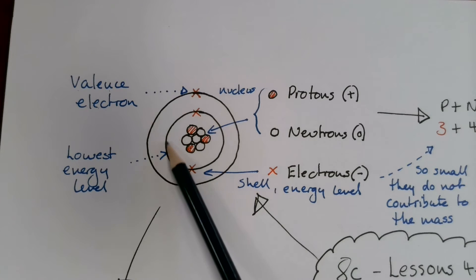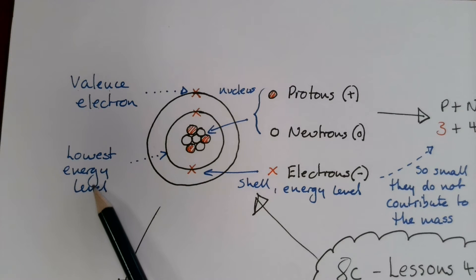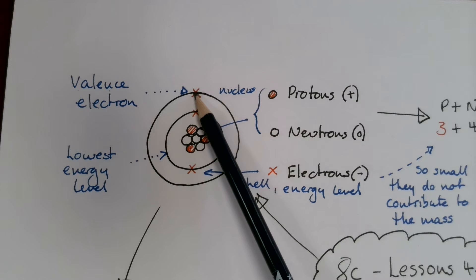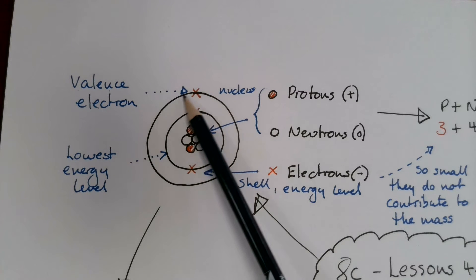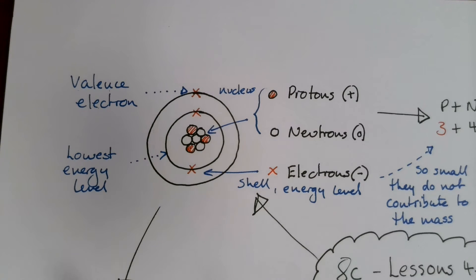I've got two in my first shell, or the lowest energy level, and in this example I've got one electron in the outer shell, or the highest energy level.